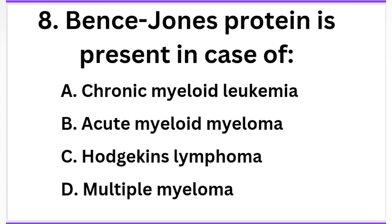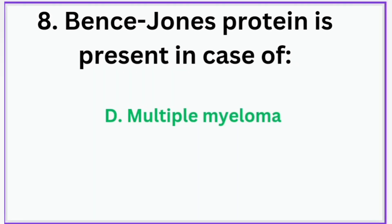Bence Jones protein is present in case of: Option A: Chronic myeloid leukemia, Option B: Acute myeloid myeloma, Option C: Hodgkin's lymphoma, Option D: Multiple myeloma. The correct answer is Option D — Multiple myeloma. Bence Jones protein is present in case of multiple myeloma.